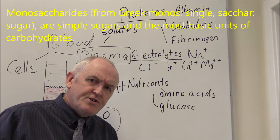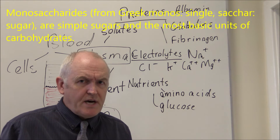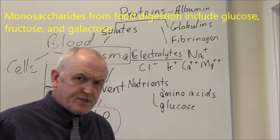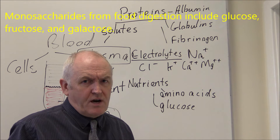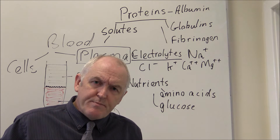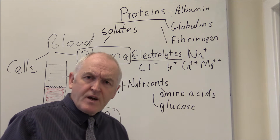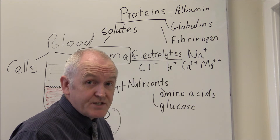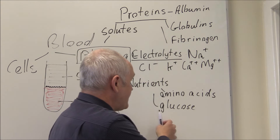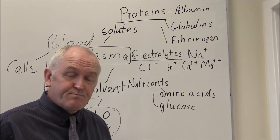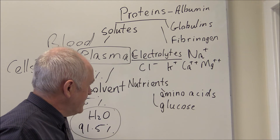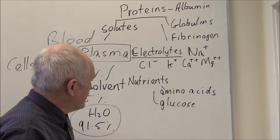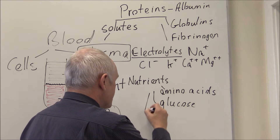Various monosaccharide sugars are absorbed from the gastrointestinal tract into the blood, but the only one you're going to find in the blood is glucose. Any other monosaccharides present in the diet are absorbed into the gut, go directly to the liver in the hepatic portal vein, and the liver will convert any other sugars into its preferred sugar, which is glucose. So when we talk about blood sugar, we're always talking about blood glucose levels.